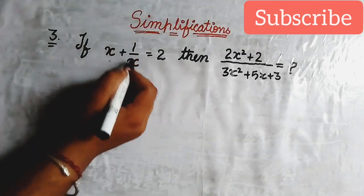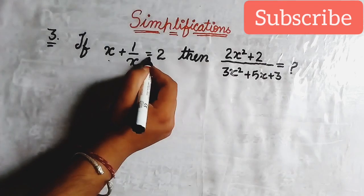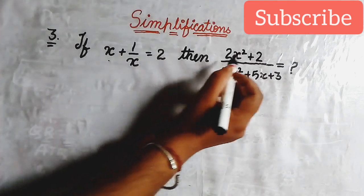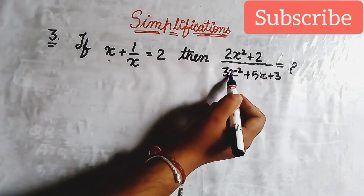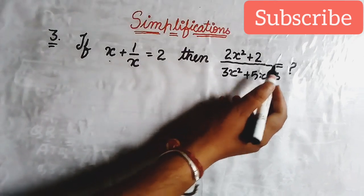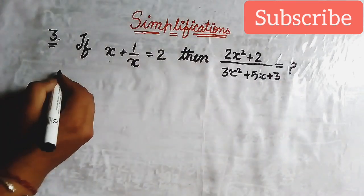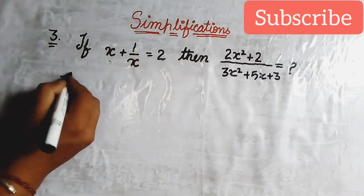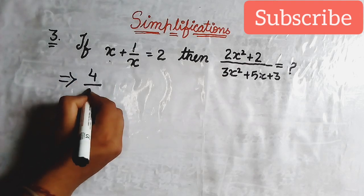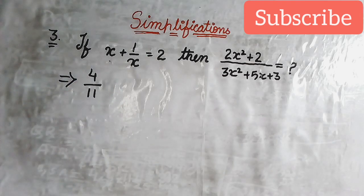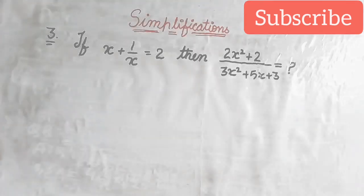Now let us see one more amazing simplification: if x plus 1 upon x equals 2, then find (2x squared plus 2) divided by (3x squared plus 5x plus 3). The answer will be 4 upon 11. Let us see the explanation.